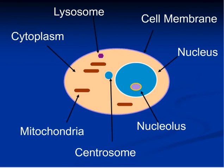An organelle is a subunit found in a cell that has a specific function. The word organelle means small organ. A cell breathes in oxygen, digests food, controls its functions, and can reproduce. The diagram shows some important organelles of a cell that perform these important functions. These are not the only components but are the major components found in most cells.